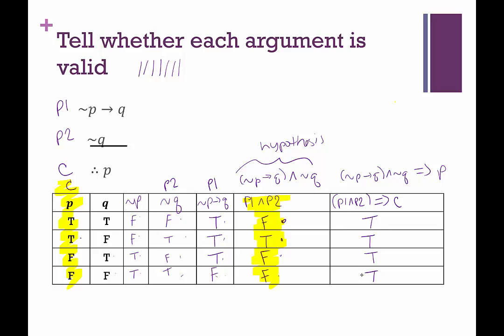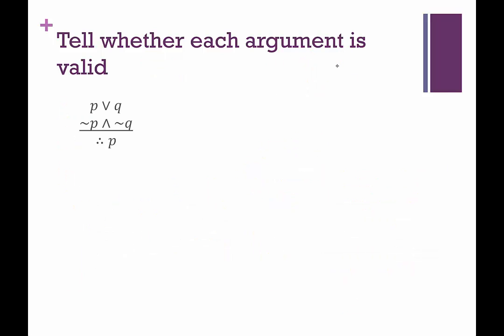If we have a false hypothesis, the conditional is true. For the second row, if true then true — that's true. If false, it's going to be true. And if false is going to be true. The final column ended up being all trues — that's a tautology, which indicates we have a valid argument. So this argument is valid.